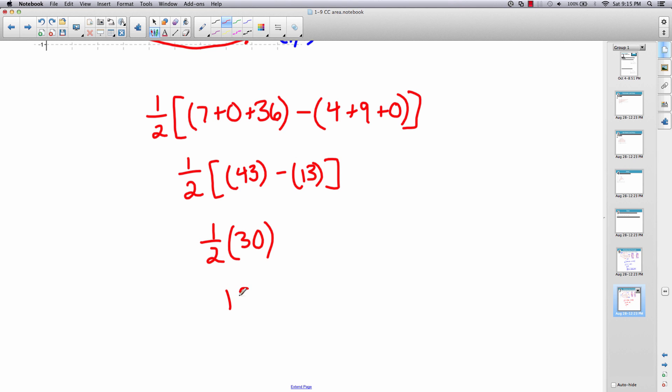And this works out nicely: half of 30 is 15, so the answer is 15 square units. And that is how you find area using the shoelace method.